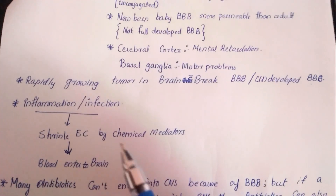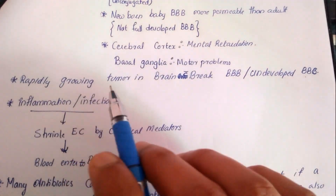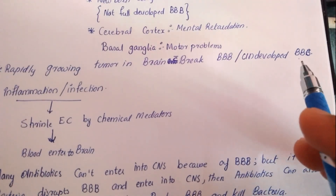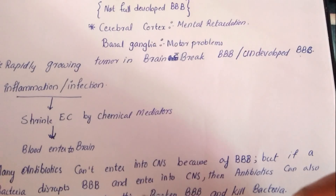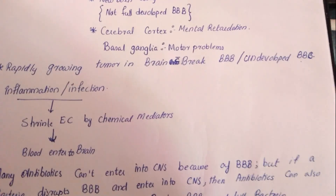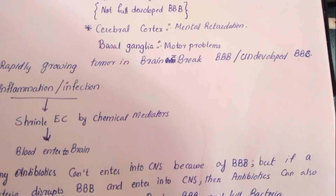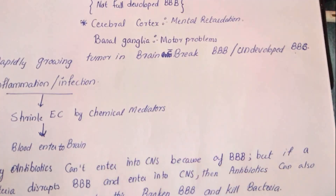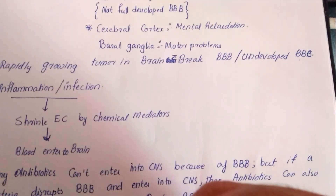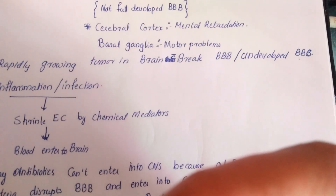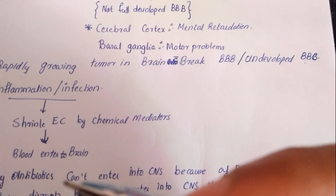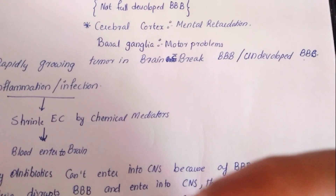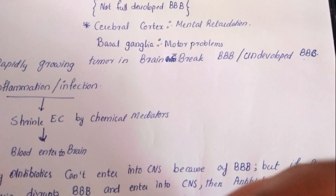Other causes of BBB disruption include rapidly growing tumors in the brain. Cancer involves uncontrolled proliferation of cells that multiply very fast and do not mature, so there is no time for a fully developed blood-brain barrier to form. This breakdown of the blood-brain barrier allows blood contents to enter into the brain, affecting neurons, glial cells, and specific brain areas.